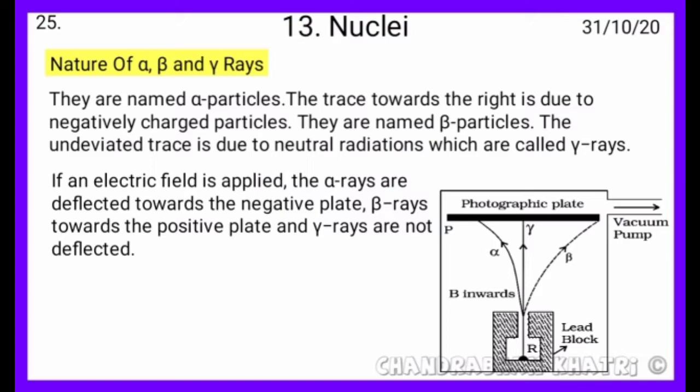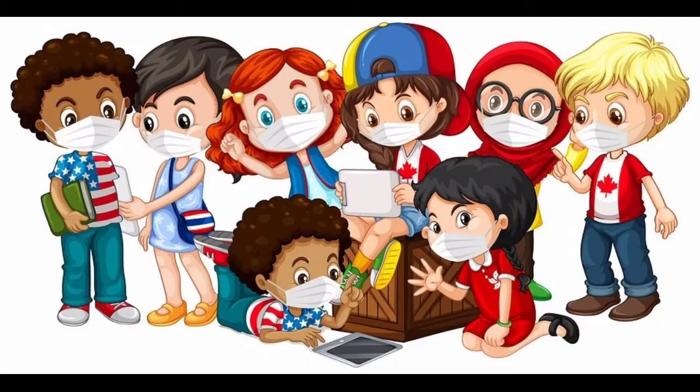If an electric field is applied, the alpha rays are deflected towards the negative plate, beta rays towards the positive plate, and gamma rays are not deflected, as shown in this diagram.